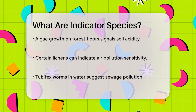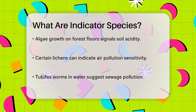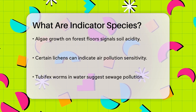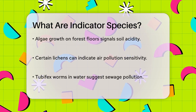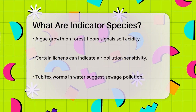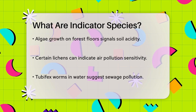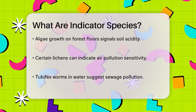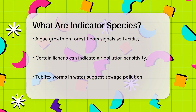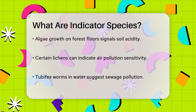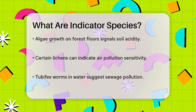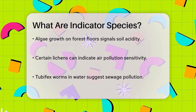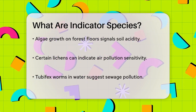Another example is algae in forests. If a lot of algae start growing on the forest floor, it's a sign that the soil is acidic. Similarly, the presence of certain types of lichen can indicate air pollution, because lichen is very sensitive to pollutants like sulfur dioxide.